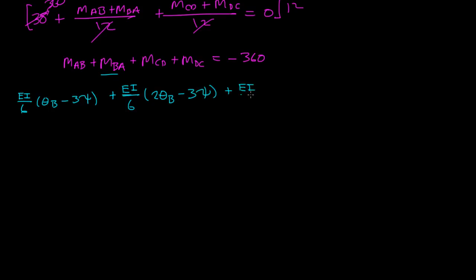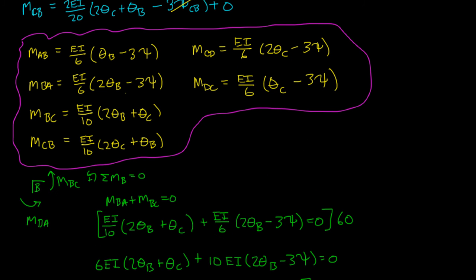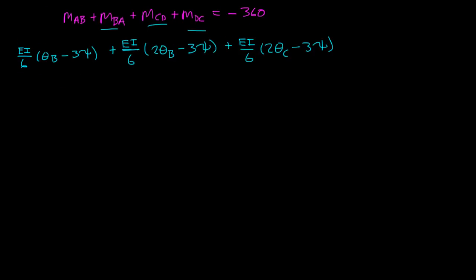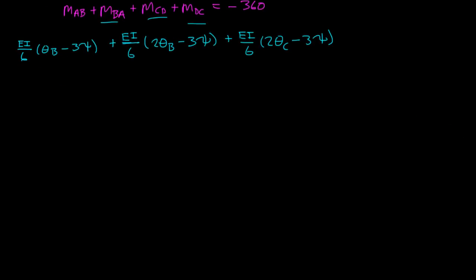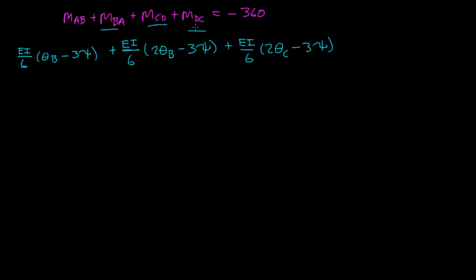And then, plus EI over 6, MCD was 2 theta C minus 3 psi, and then MDC, which was... MDC was EI over 6 theta C minus 3 psi. You guys can't see that, can you? That's good. So, MDC was EI over 6 times theta C minus 3 psi, and all that's equal to negative 360.